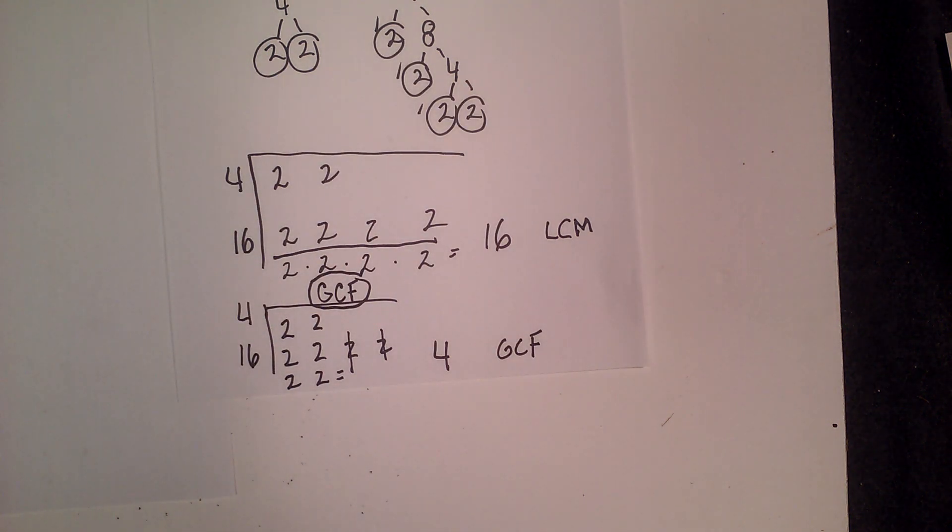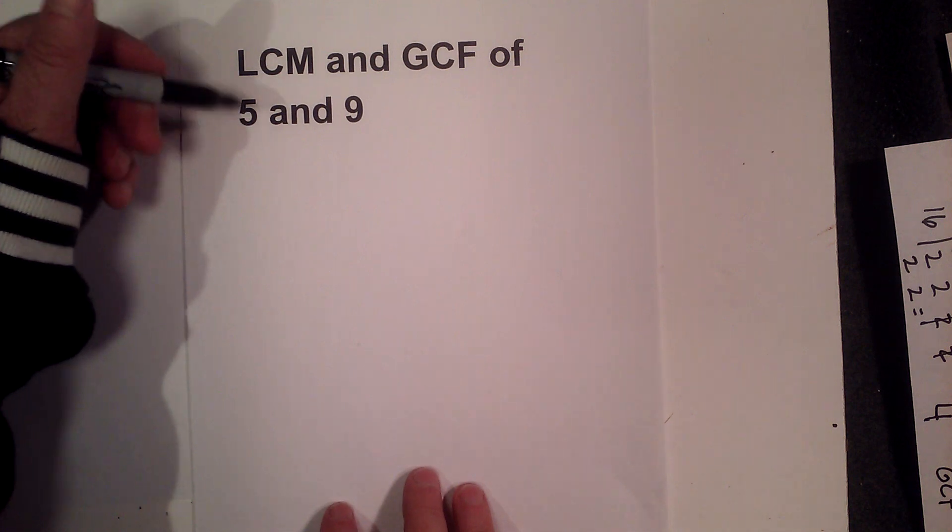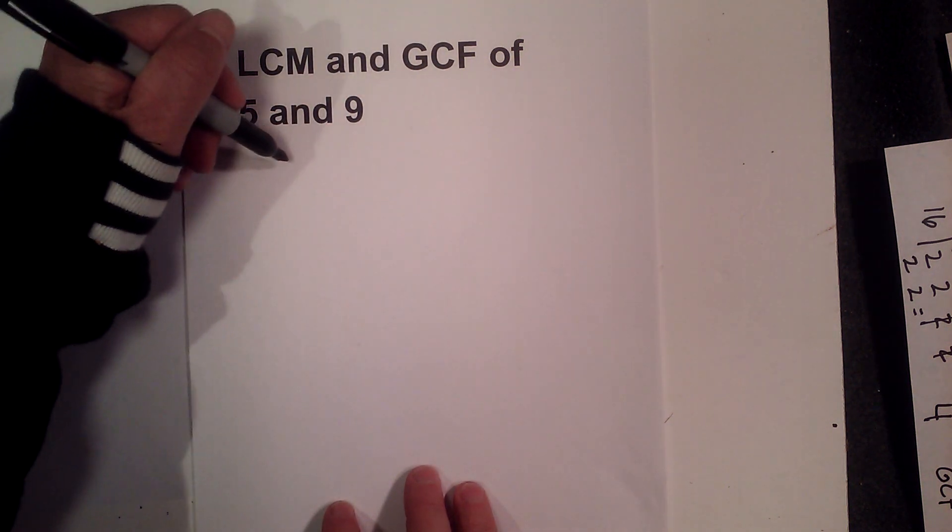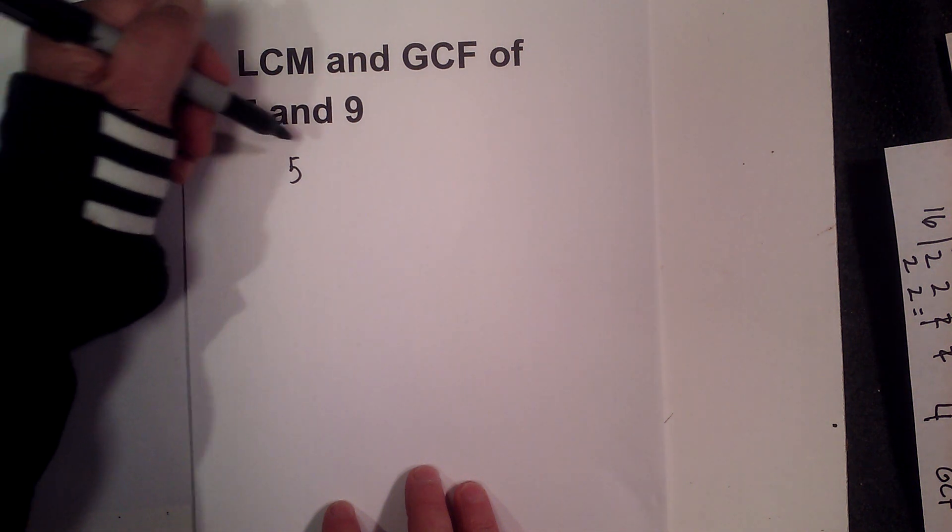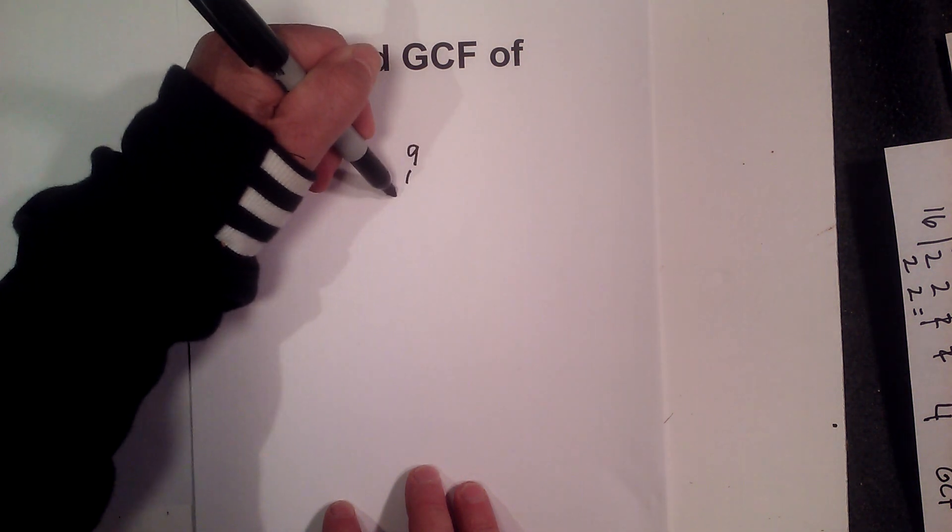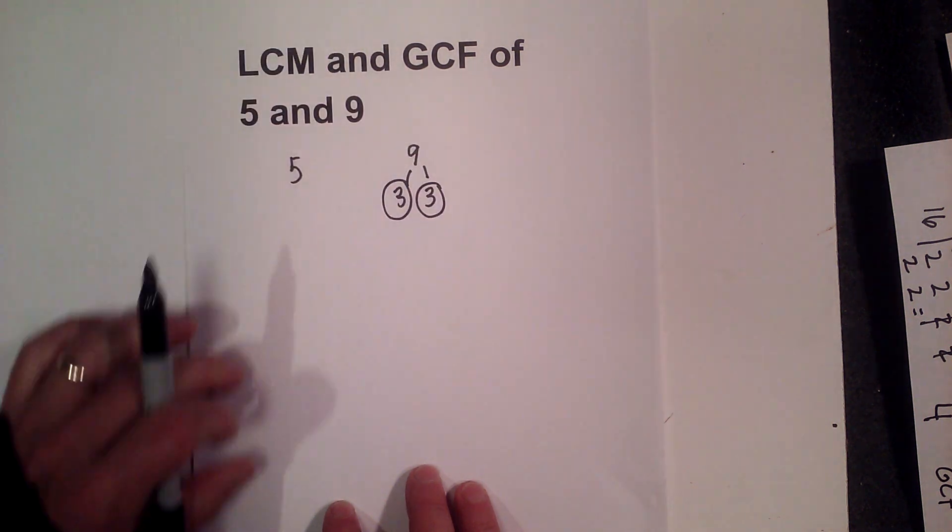Now let's focus on 5 and 9. Okay, I'm going to use the same process, a factor tree, for finding the LCM and GCF of 5 and 9. Factor tree for 5 will not take long, because it's prime. Now 9, I can go 3 times 3, circle the 3, because they're prime.